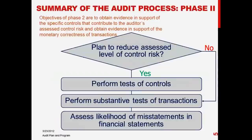In phase two, the summary of the audit process is to look at your plans to reduce your assessed level of control risk. If you can rely on internal controls — meaning control risk is relatively low — then you'll test those controls. Tests of controls and substantive tests of transactions are performed concurrently in most cases, because your internal control procedures are your procedures over transactions.